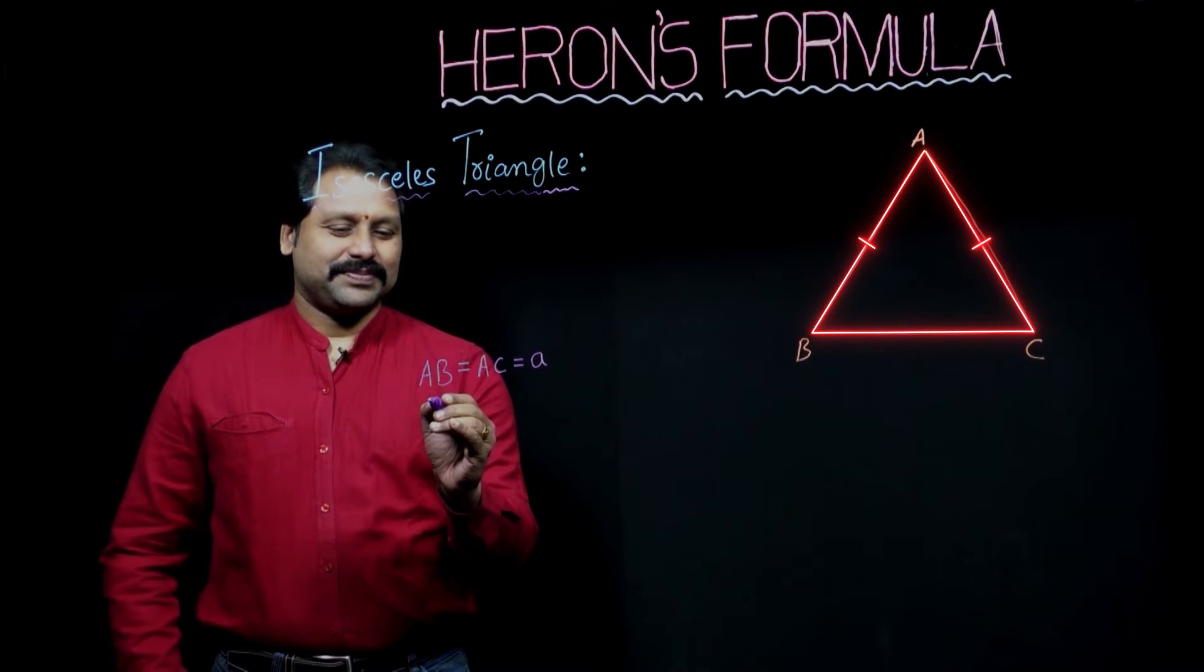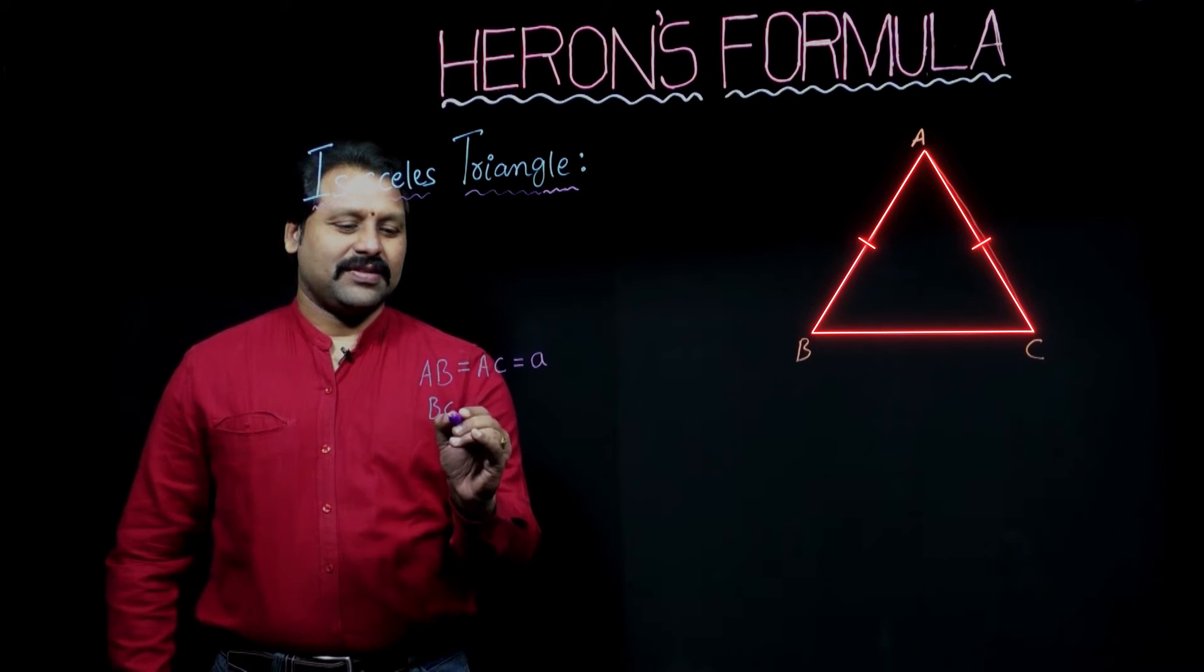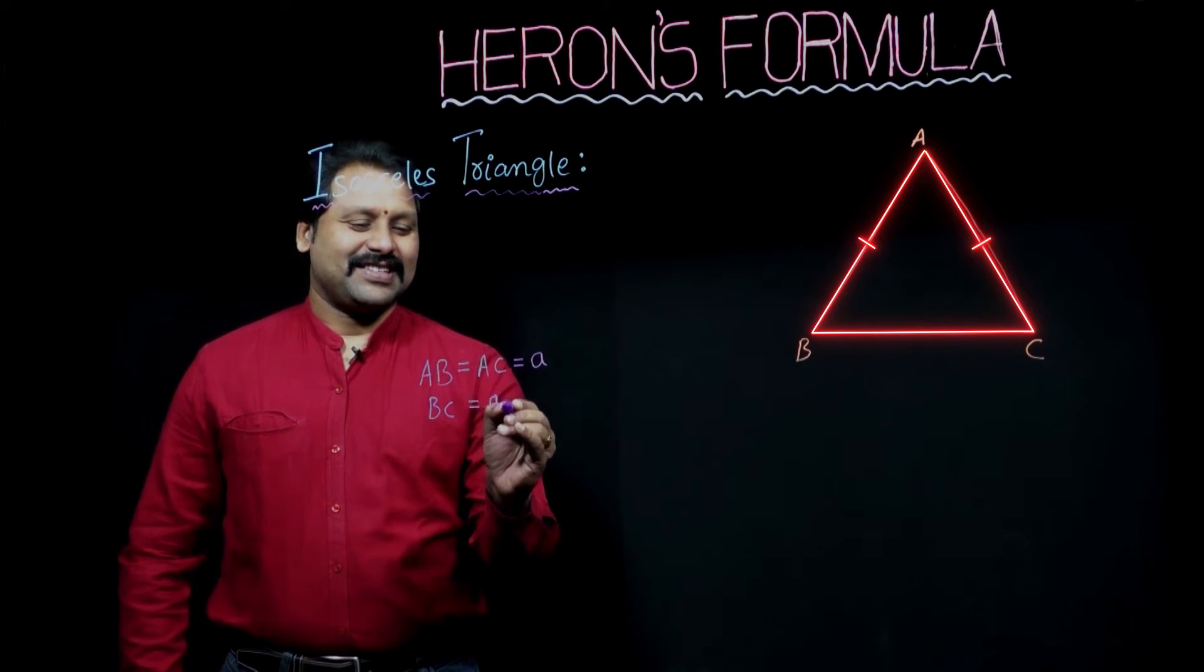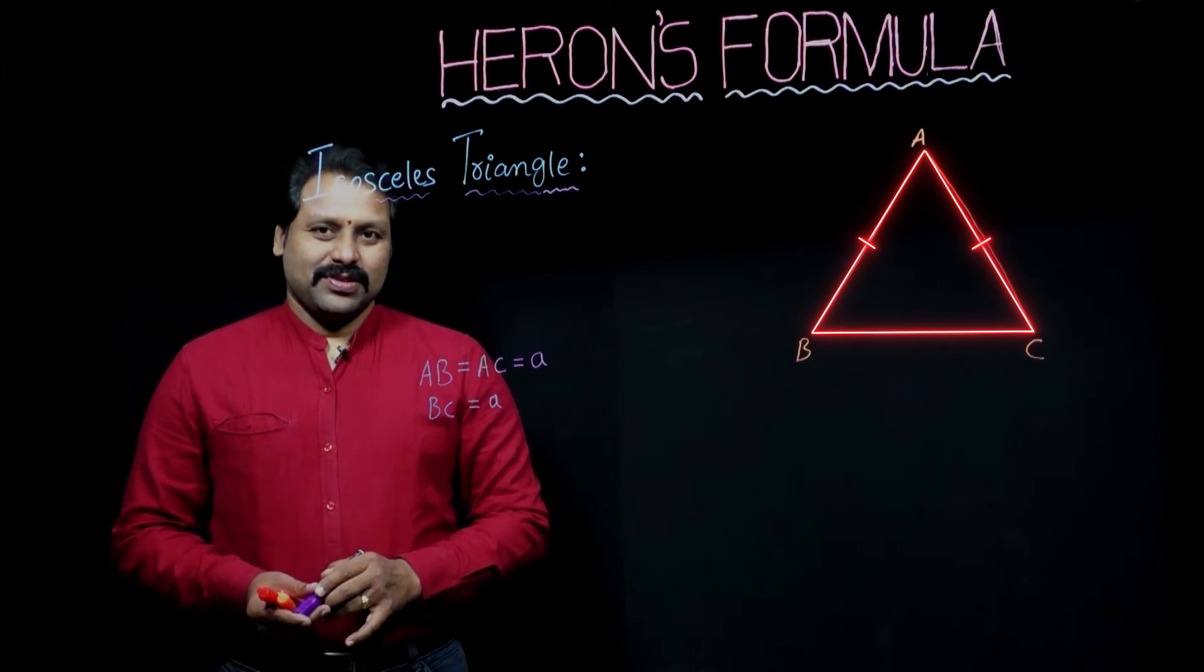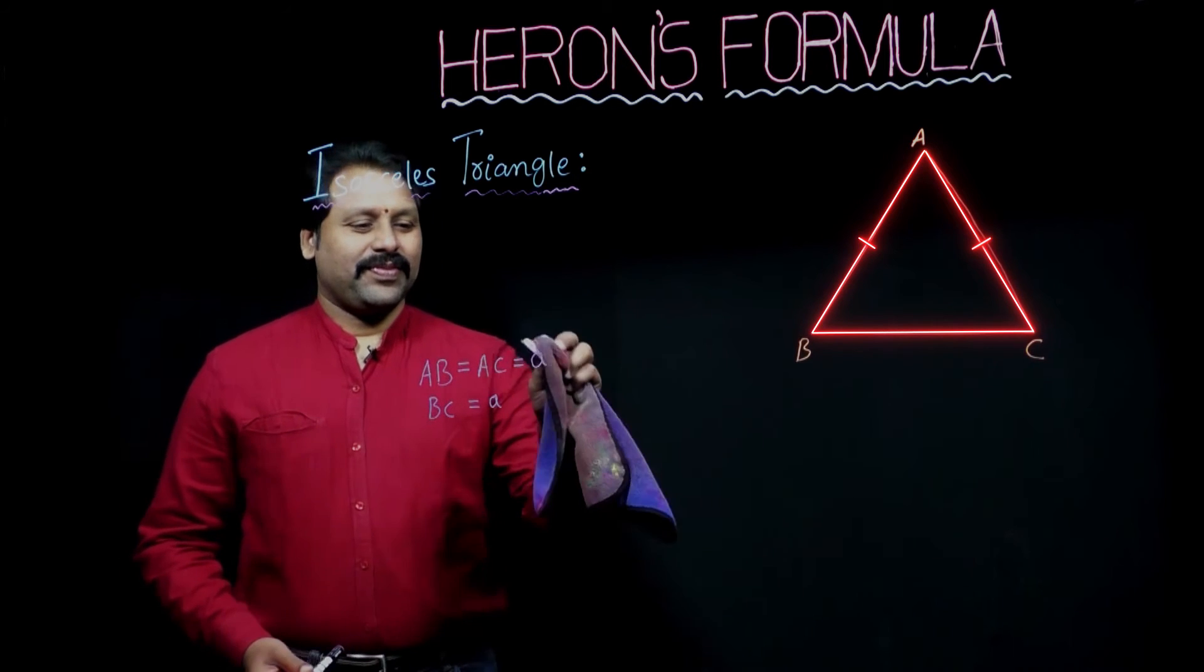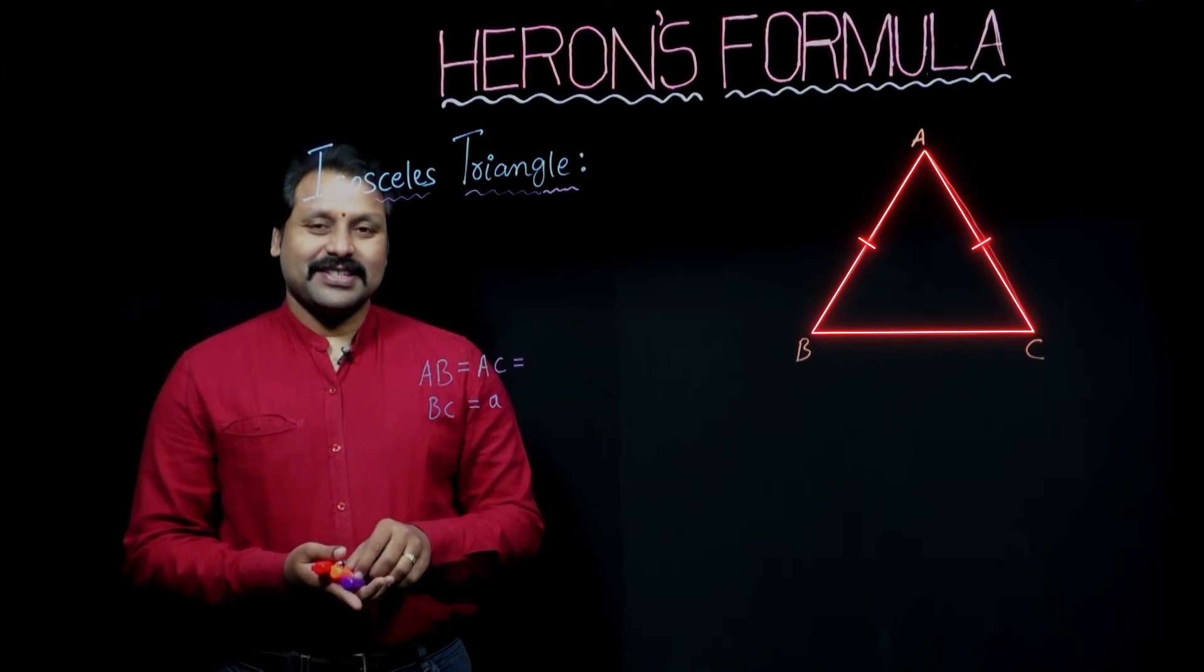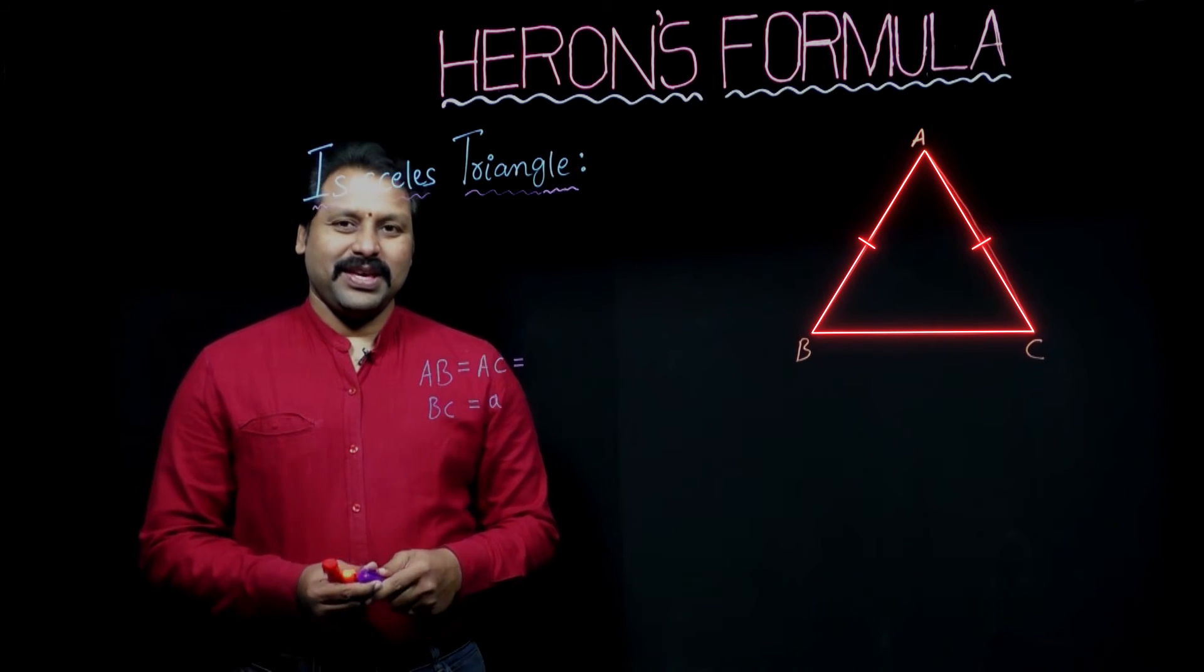The base BC, consider A units. So here, AB equal to AC. Let us consider small B.